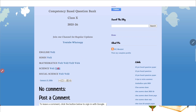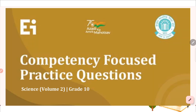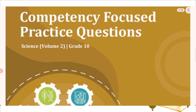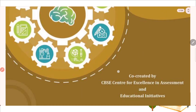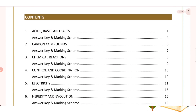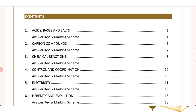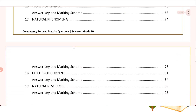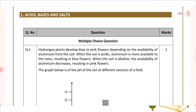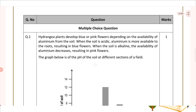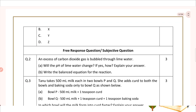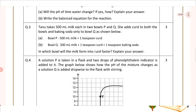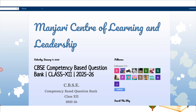Now let us see volume two of Science. You just need to click on that link. Once you click on it, you are going to get this competency focused practice question released by CBSE — Science volume two for grade 10. If you scroll down, you will see the contents. All chapters are listed like Acid, Base and Salt, Carbon Compounds, Chemical Reactions, and Electricity. The questions are competency-based — one paragraph is given with a bar chart, multiple MCQ questions, and subjective questions based on competency.